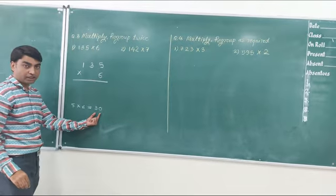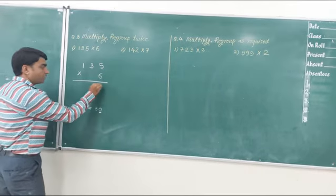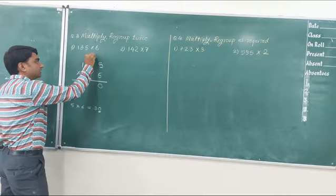So we got a 2-digit number. Now we need to regroup this 30. For that, 0 will be written here and 3 will be carried to the next place.